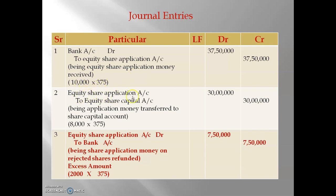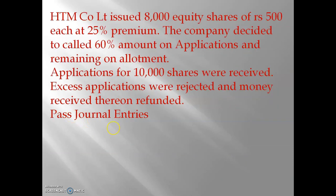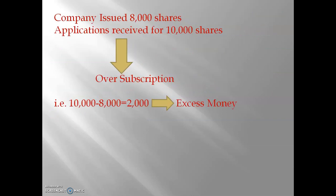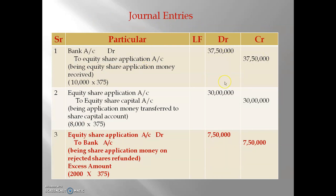Entry two — transfer entry: Equity Share Application Account Dr. to Equity Share Capital Account. Here we take only 8,000 issued shares (not 10,000), because excess applications are rejected. So 8,000 × 375 = Rs. 30,00,000. Being application money transferred to share capital account. Entry three — rejection entry: Equity Share Application Account Dr. to Bank Account. Company rejected 2,000 shares at Rs. 375 per share.